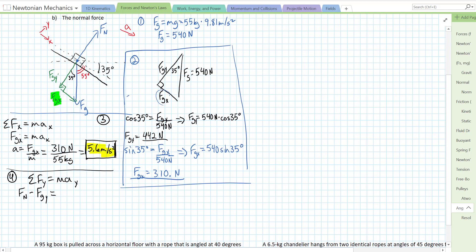So, normal force minus fgy equals, well, the acceleration in the y direction is zero. It's not going off of the slope. It's not going into the slope. So, it equals zero. Our normal force is just equal to fgy. We already solved for fgy. It is 442 newtons. So, to two sig figs, that is 440 newtons. Equals our normal force.